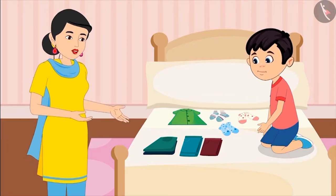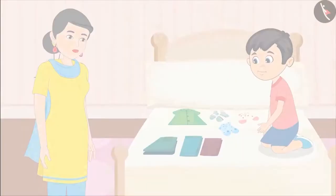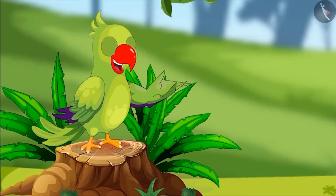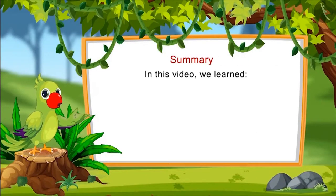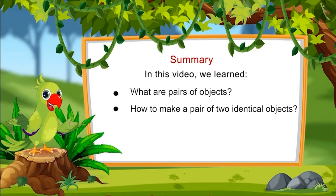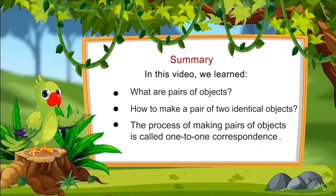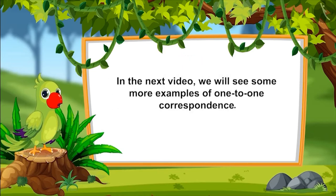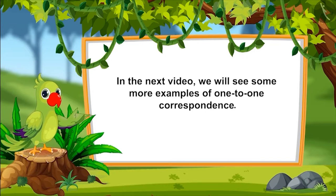Come on, now quickly keep all these clothes inside and go to sleep. So children, like Chotu, can you think of more examples of pairs? That's all for today. In this video, we learned what are pairs of objects, how to make a pair of two identical objects, and that the process of making pairs is called one-to-one correspondence. In the next video, we will see some more examples of one-to-one correspondence.